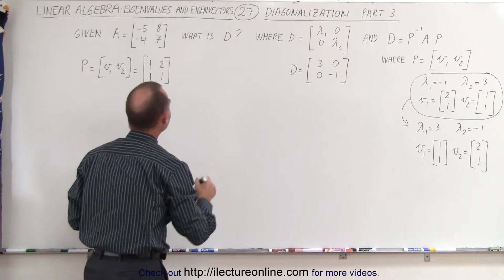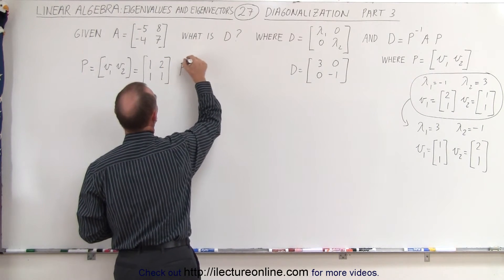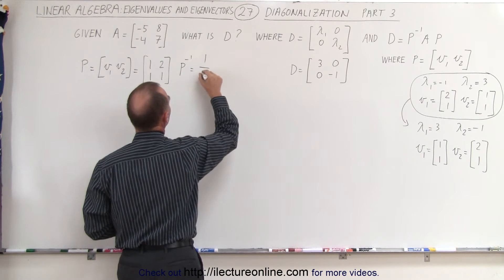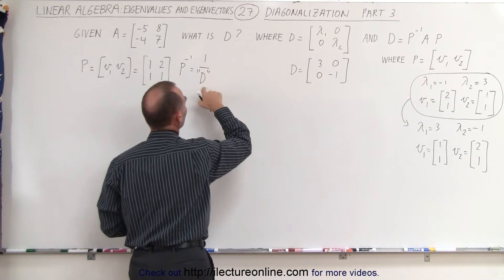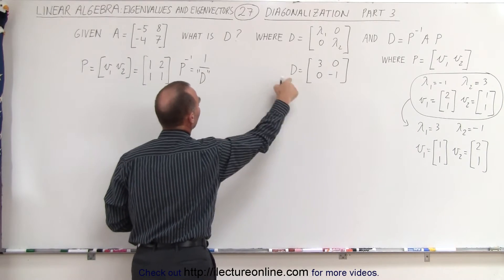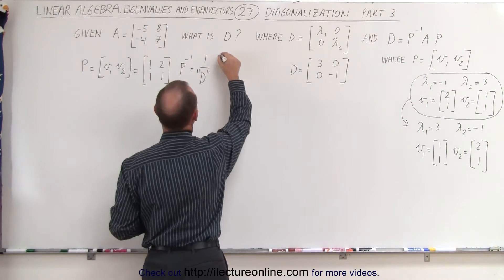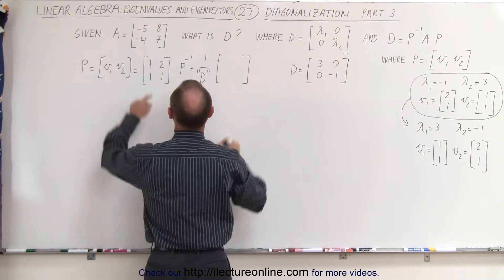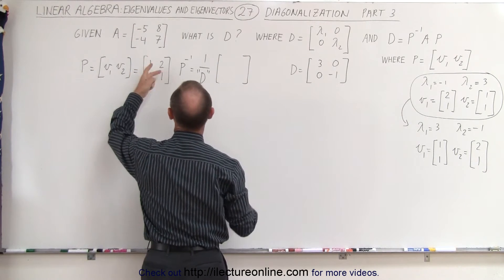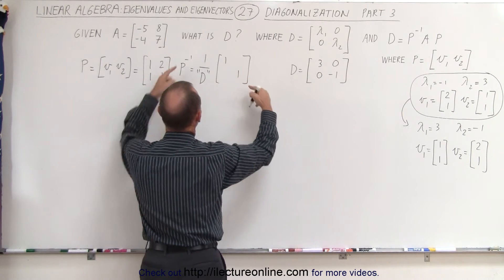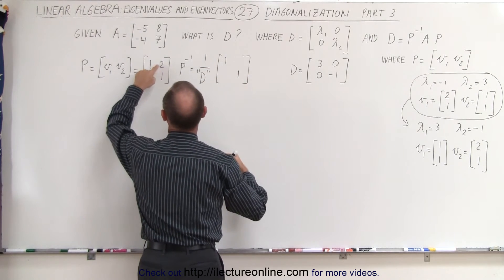Now we also need to find the inverse, P inverse, which is going to be equal to 1 over the, what we call the determinant, and so not to confuse it with the diagonal, I'm going to put little quotation marks around it, times this matrix with the ones exchanged. Of course, that doesn't make any difference. We simply exchange it this way, and then these become negative, a negative 1 and a negative 2.